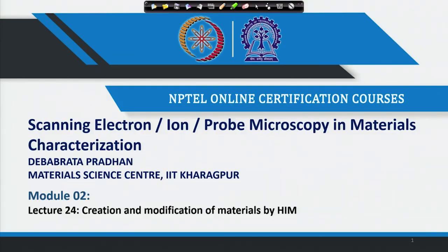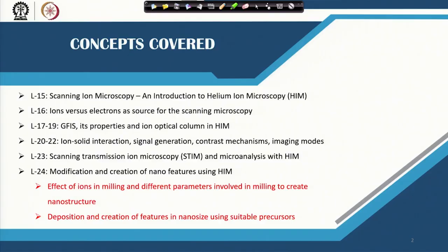Today, as a last lecture on the helium ion microscope, I will discuss what additional things you can do — whether you can create features of nano size, or deposit features of nano size using a helium ion microscope. We will see how these ions can be used to mill the surface of the specimen and create structures of the desired size, and also how one can deposit certain materials on the specimen to a desired size and shape.